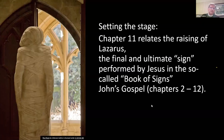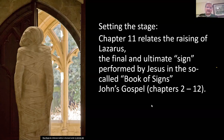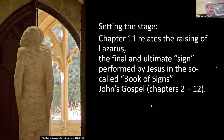Chapter 11 relates the raising of Lazarus — the final and ultimate sign. In John's gospel, a sign is a miracle. In the synoptic gospels — Matthew, Mark, and Luke — they use the word miracle. But here in John's gospel, a miracle is a sign. The basic structure of John's gospel accepted by almost everybody today: chapter 1 is a prologue, chapters 2 to 12 are the book of signs, chapters 13 through 20 is the book of glory, and chapter 21 is an epilogue.